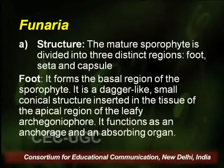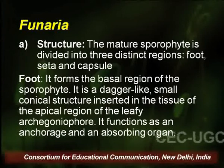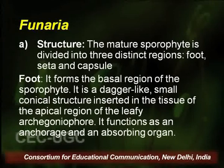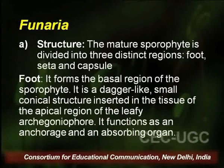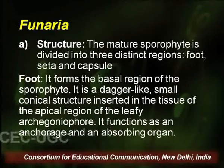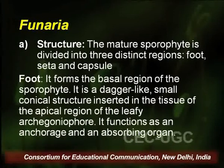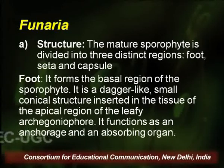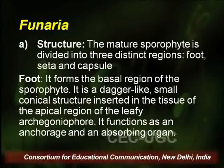As far as the structure of the sporophyte is concerned, the mature sporophyte is divided into three distinct regions: the foot region, the seta, and the capsule. The foot forms the basal region of the sporophyte. It is a small conical, dagger-like structure inserted in the tissues of the apical region of the leafy archegonial head. The foot functions as anchorage and an absorbing organ. The outer wall of epidermal cells in the foot have finger-like wall ingrowths to increase surface-to-volume ratio for nutrient absorption. These wall ingrowths fuse at their extreme end forming a labyrinth containing pockets of cytoplasm, and these cells are termed transfer cells. A similar extensive labyrinth is also present in the neighbouring gametophytic tissues.